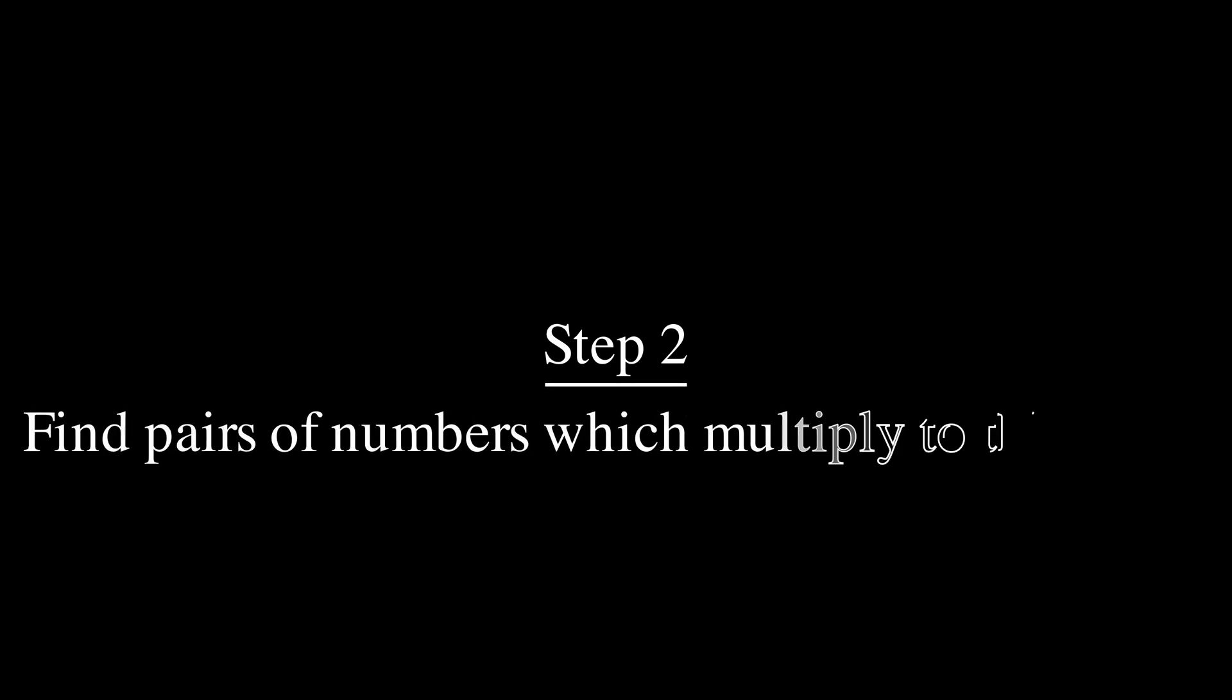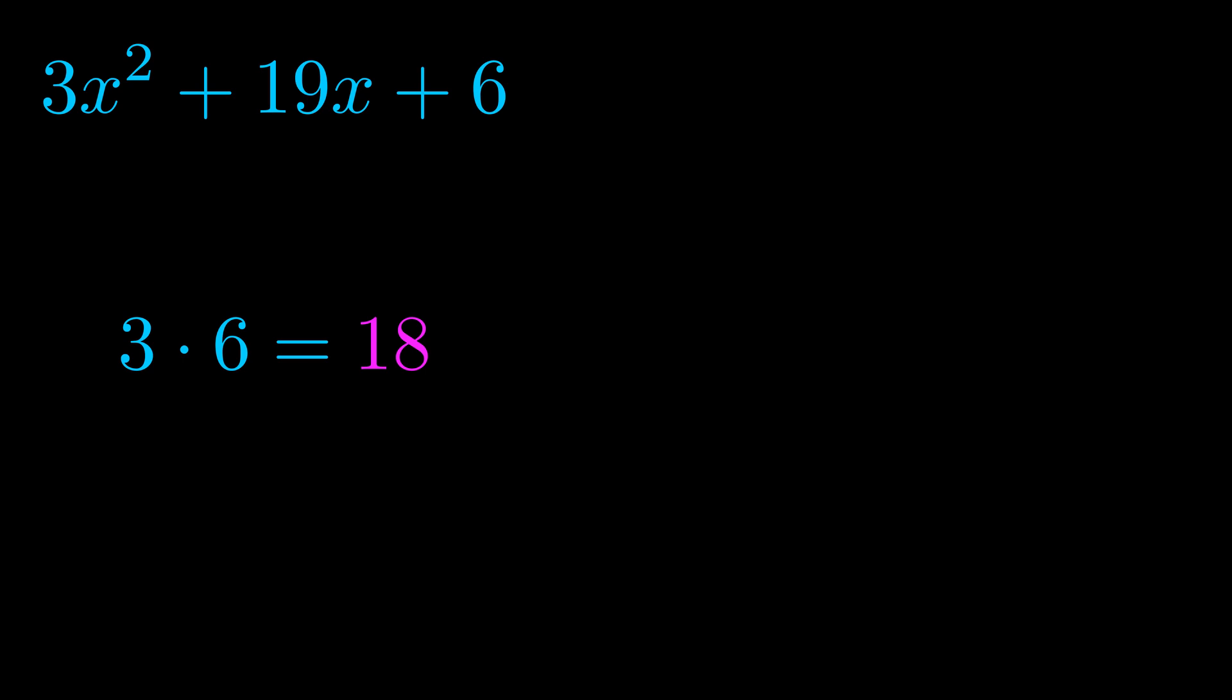Step two is to try to find all of the pairs which multiply to this number. Now it turns out you don't really need to find all of them, but go ahead and write down as many numbers as you can that multiply to the magenta value for now. Pause the video and resume when you're ready to continue. Okay, here's what I came up with.